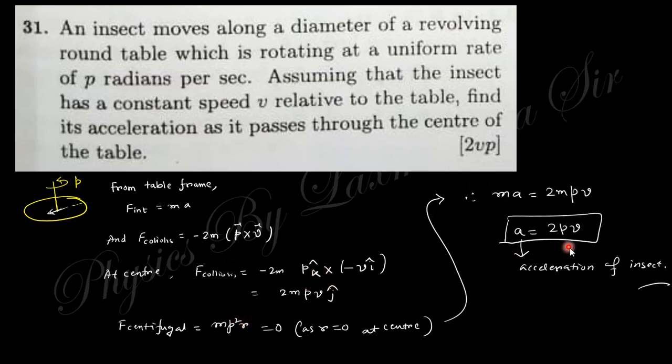Equating mass times acceleration to only the Coriolis force (since centrifugal force is zero at the center), the acceleration is 2pv.